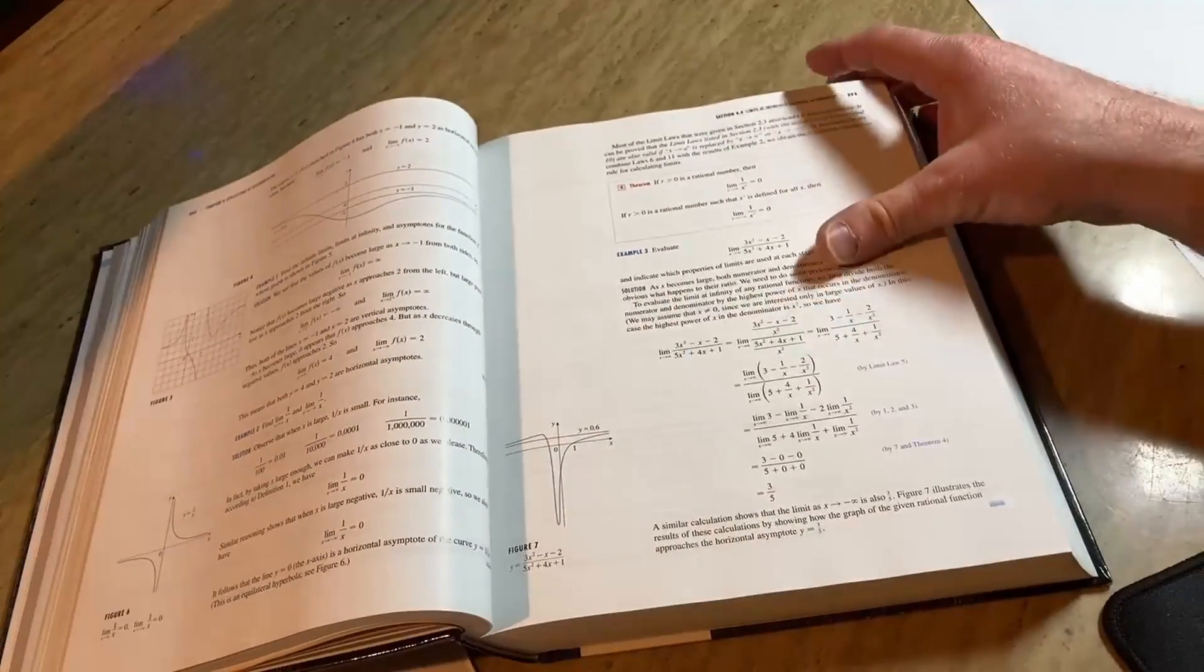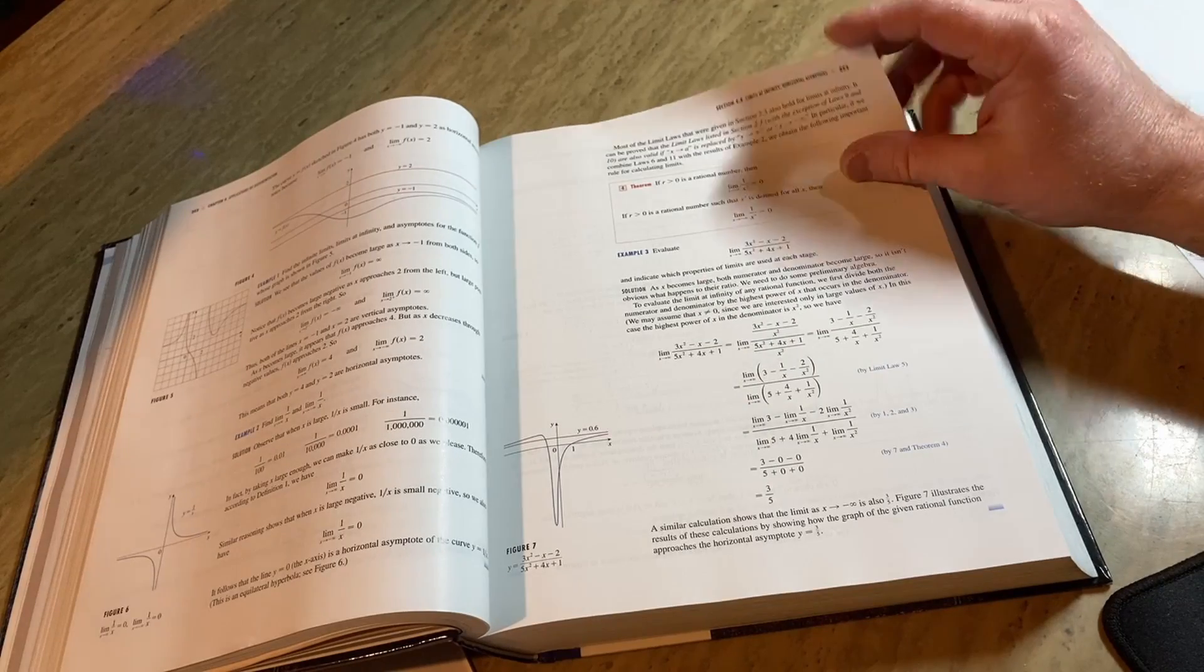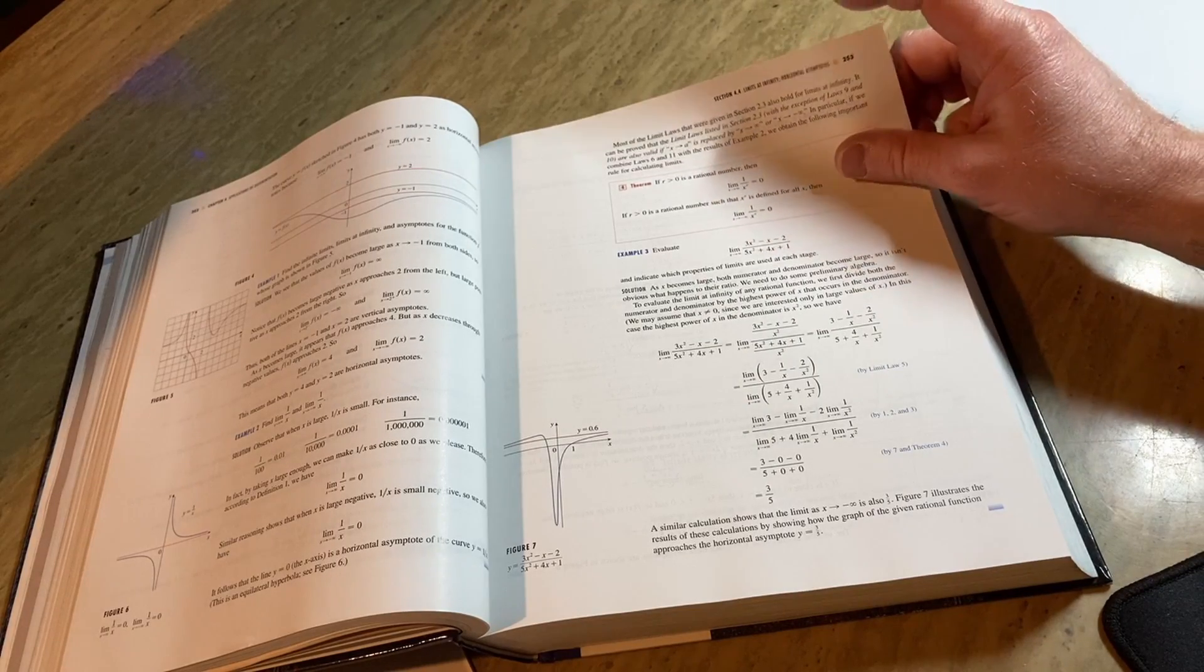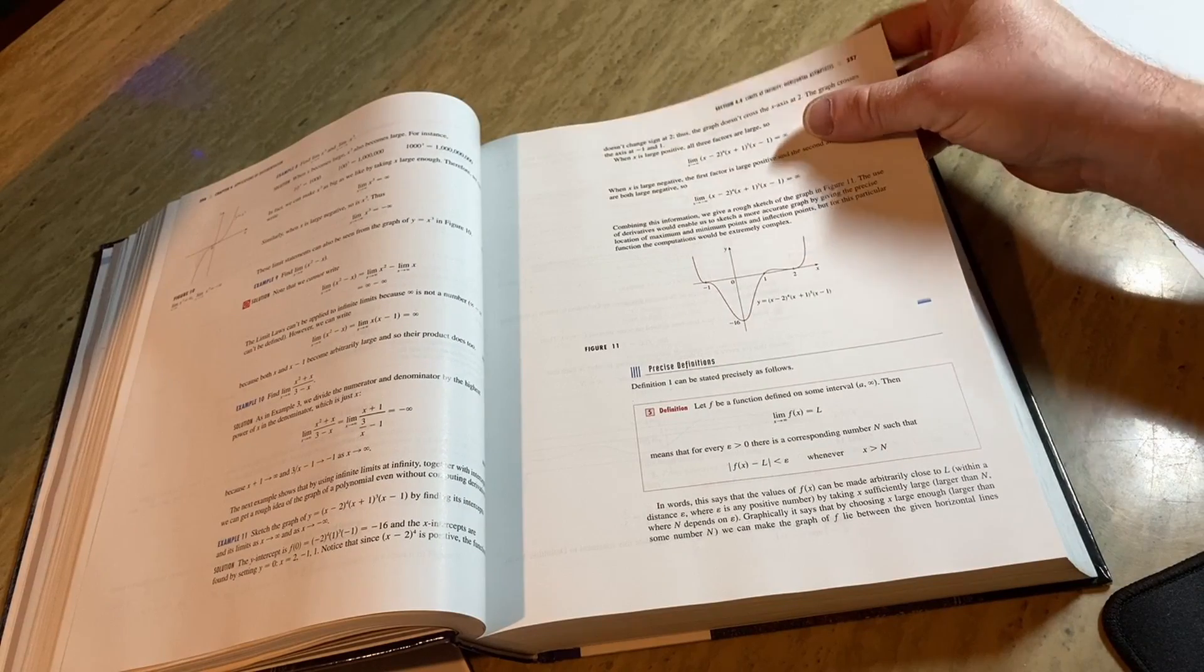This book, just like the others, has answers to all of the odd problems. It's a very well-made book, by the way. All of these books are well-made. They're not cheaply made. They feel like they're heavy duty. These books are expensive. This book, new, it's probably over $200. But that's usually how much they cost new.